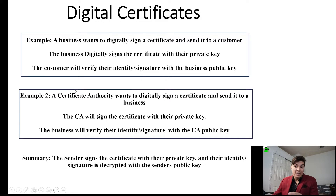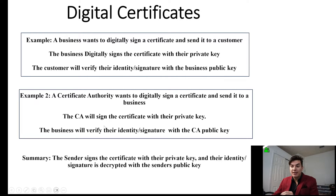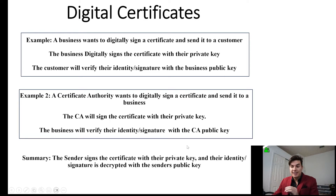Example two: a certificate authority wants to digitally sign a certificate and send it to a business. The certificate authority will sign the certificate with their private key and then the business will verify their identity and signature with the certificate authority's public key. So in summary, the sender signs their certificate with their private key and their identity is verified with their public key.